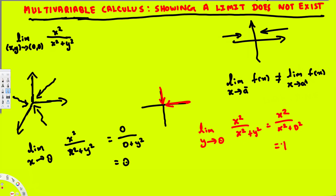We can see that the limit along the x-axis gives 0, and the limit along the y-axis gives 1. Since these are not equal, therefore we can say the limit does not exist. That's how we show that a limit does not exist in three-dimensional space. I hope this helps — thanks for watching.